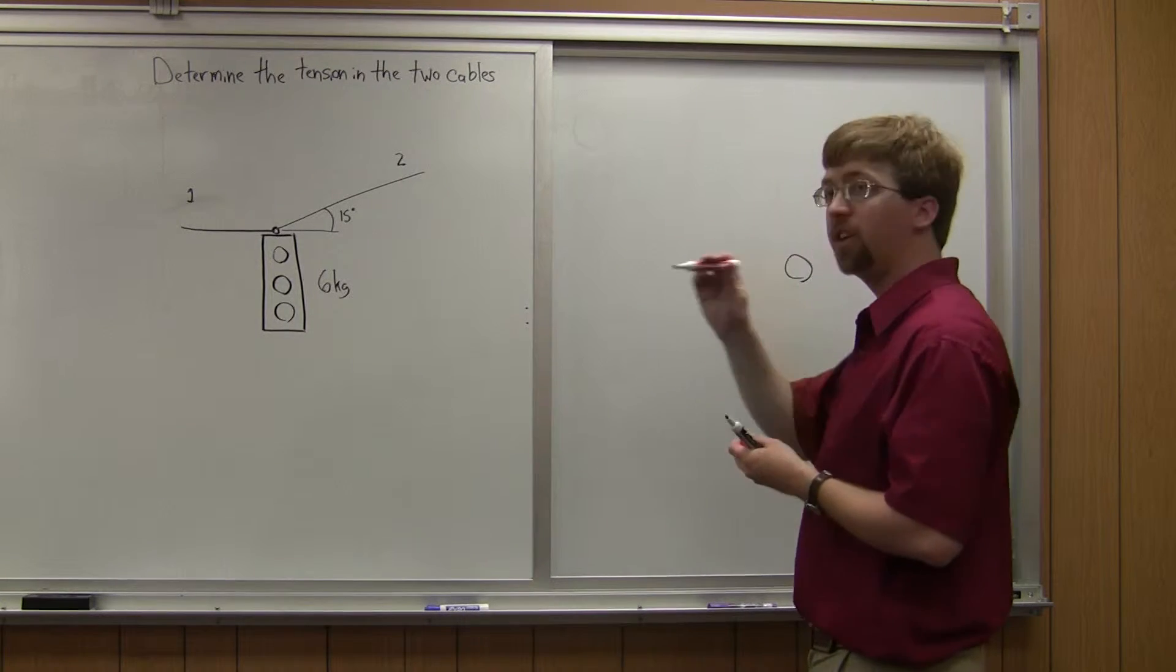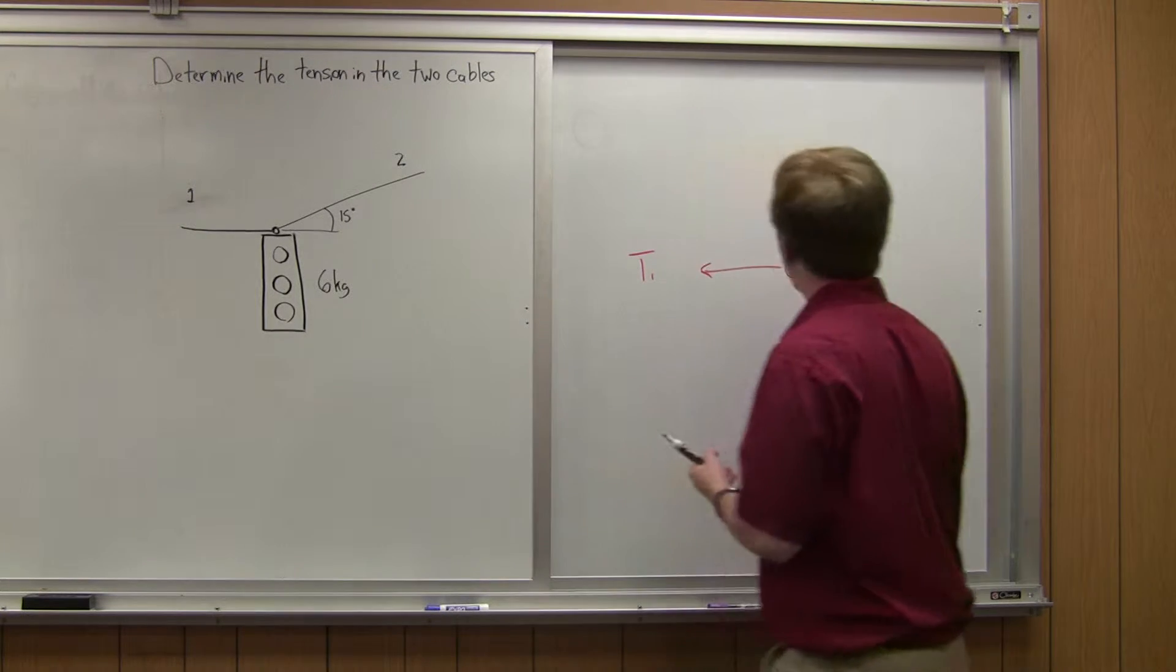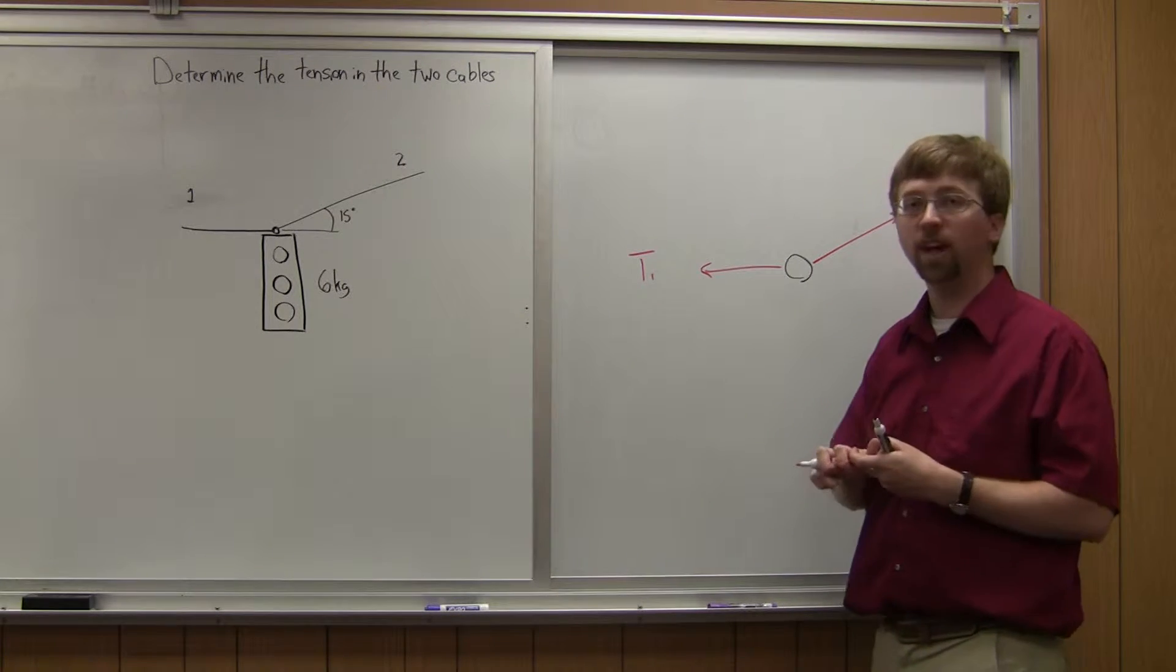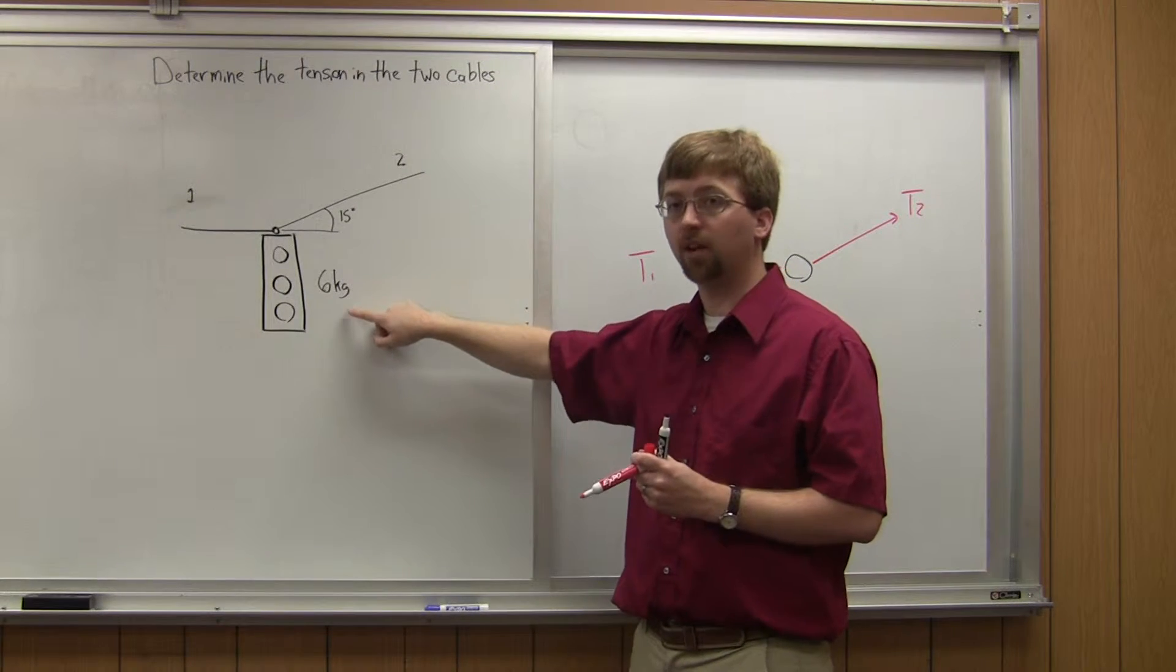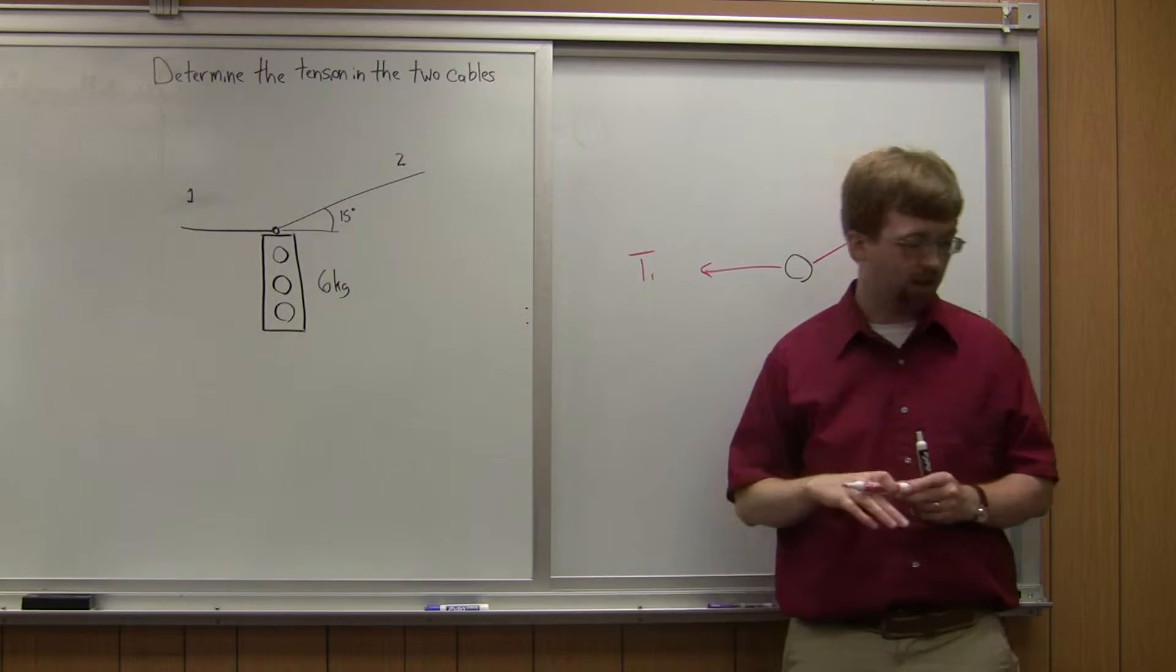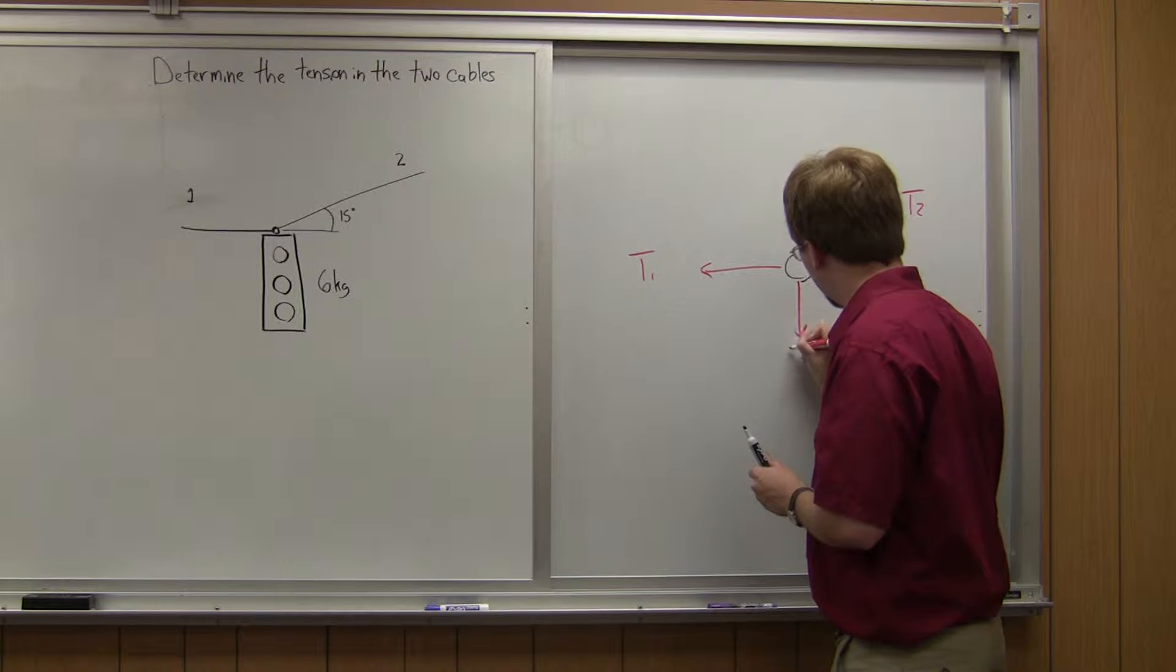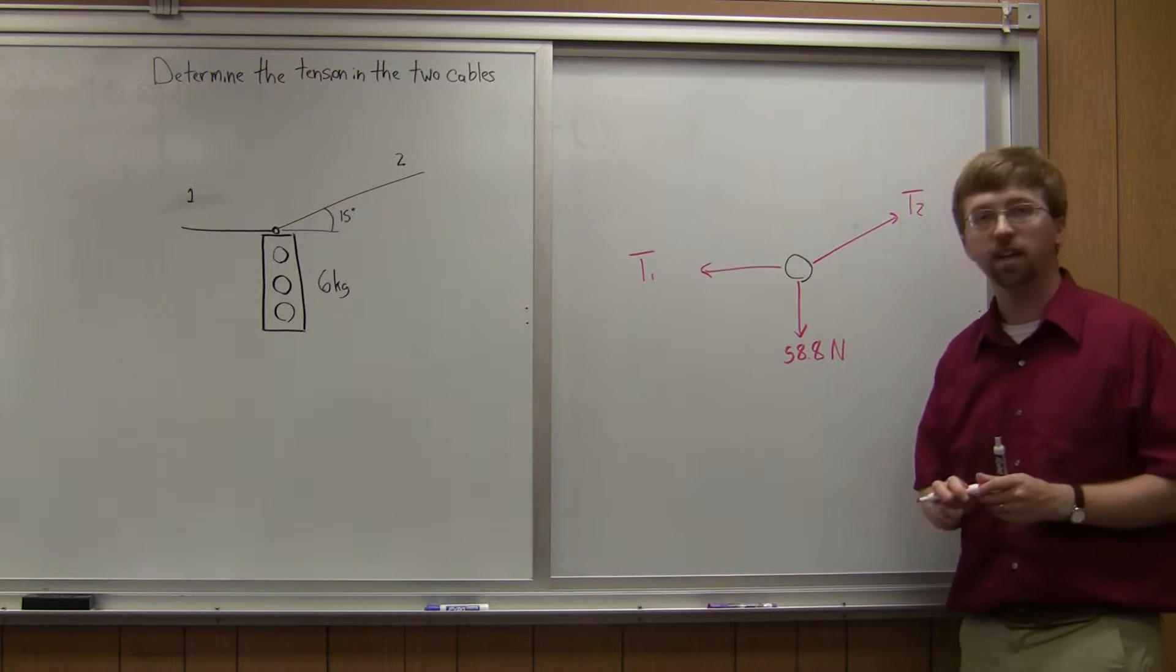I'm going to have tension in cable 1, T1. I'm going to have tension in cable 2, T2. And I'm going to have the weight force. So the weight of this is going to be in newtons. Since I've got six kilograms, it's going to be six kilograms times 9.8 newtons per kilogram. And that gives us a weight of 58.8 newtons pulling straight down.